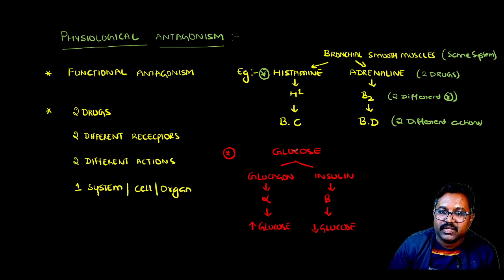With respect to glucose, glucagon will act on alpha cells in the pancreas and cause an increase in glucose release. Insulin will act on beta cells, releasing insulin secretion from pancreatic cells, and will decrease glucose levels.